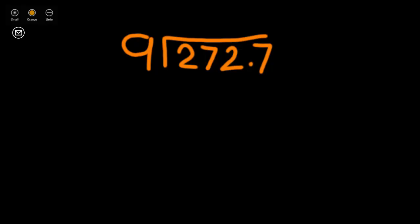The way we do the partial quotients algorithm is we want to break down this dividend of 2727 by using our factor 9. I like to use friendly factors first to find a multiple of 9 that, when multiplied by 9, will get us close to 2727, but not over.